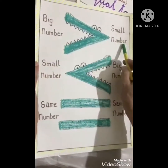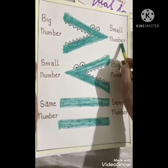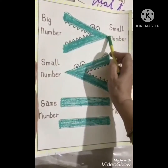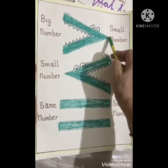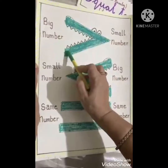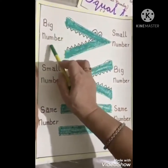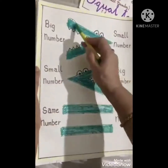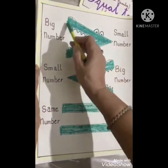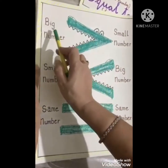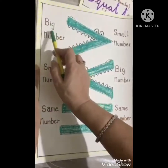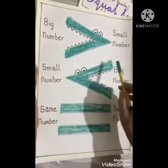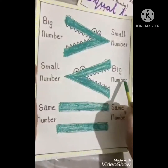The alligator closes its mouth towards the small number — on this side there is a small number, so its mouth is not open on this side. Its mouth is open on the side of the bigger number. This was the sign of greater than. To eat a number, it opens its mouth towards the bigger number.